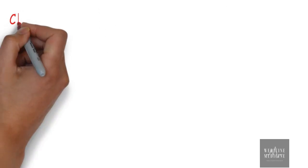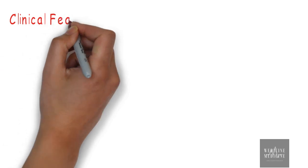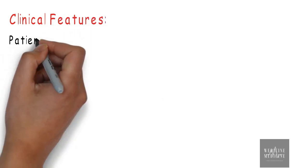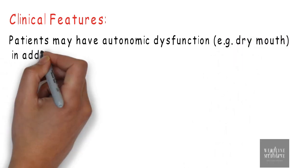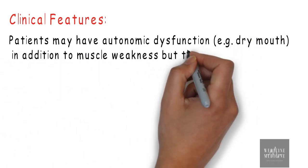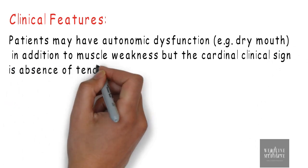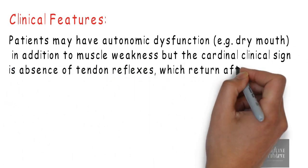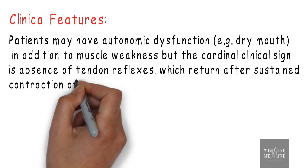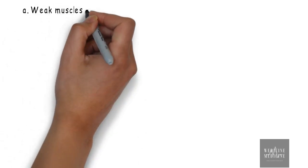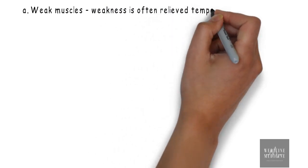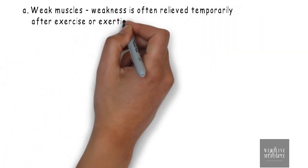Talking about clinical features, it is to be noted that Lambert-Eaton syndrome is a disorder of autonomic as well as peripheral nerves. Patients may have autonomic dysfunction in addition to muscle weakness, but the cardinal sign is absence of tendon reflexes, which return after sustained contraction of relevant muscle. The condition is characterized by weakness of muscles, which progresses caudally to cranially.